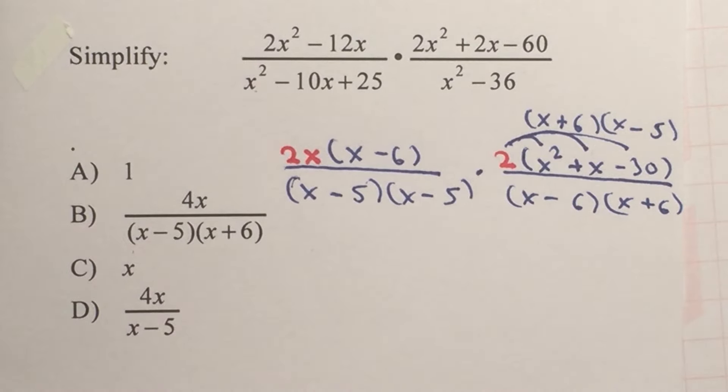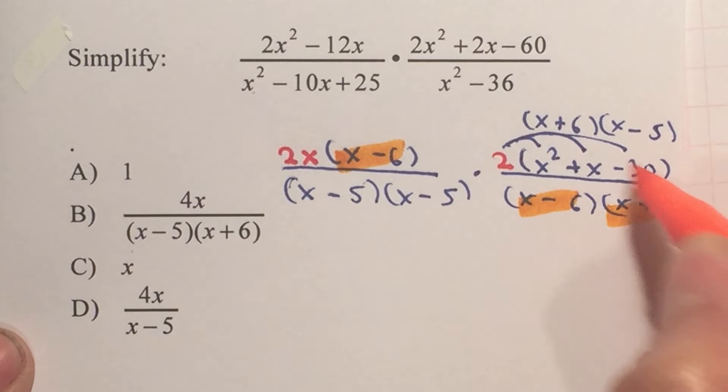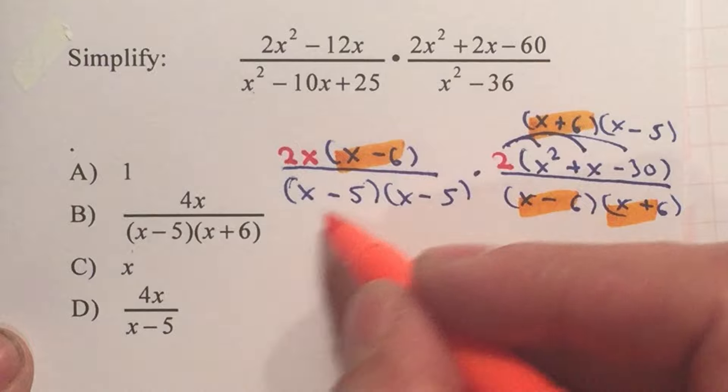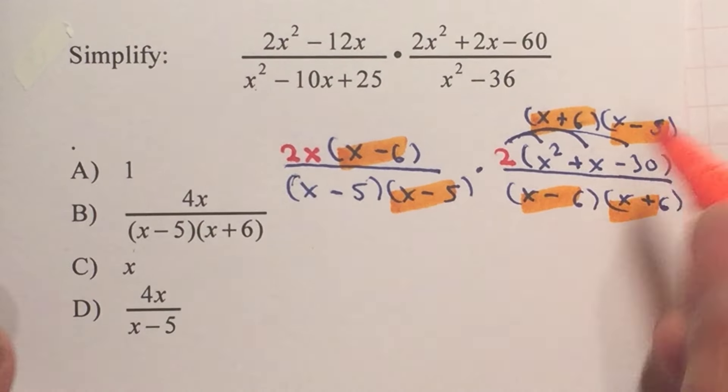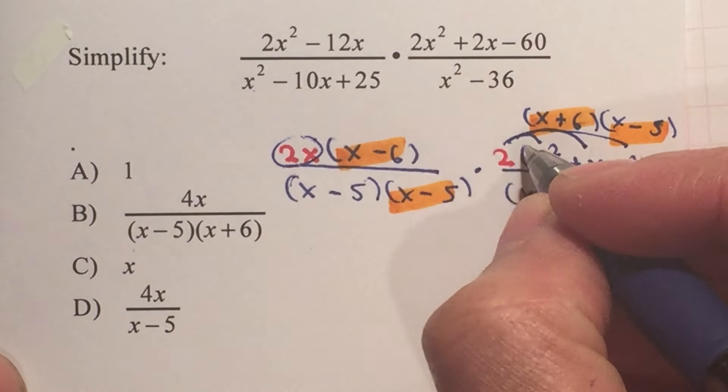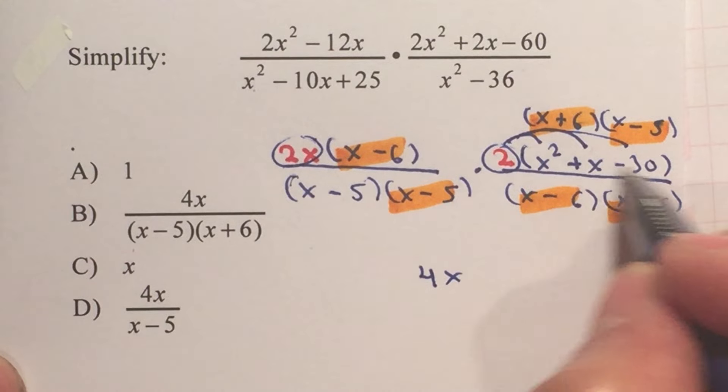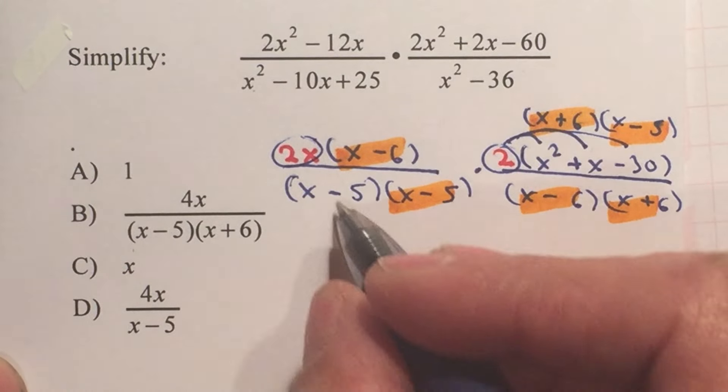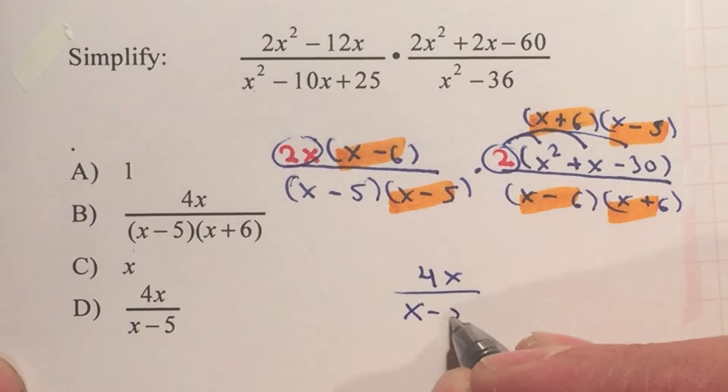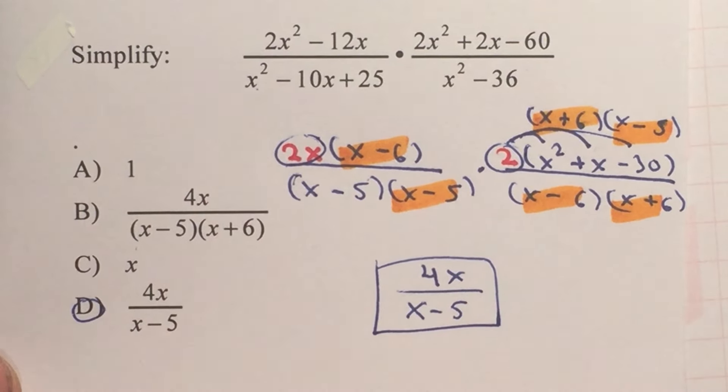And now that I factored each polynomial, I can see what cancels. So I notice that the x minus 6 will cancel out. x plus 6 will cancel out. One of the x minus 5 will cancel out. And what's left will be my answer. So we have 2x times 2 will give me 4x. Nothing else on the numerator. The denominator, we have x minus 5. So therefore, your answer is letter D.